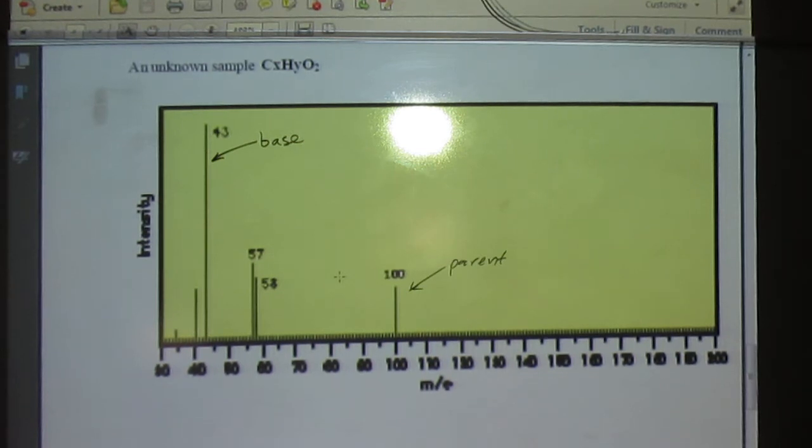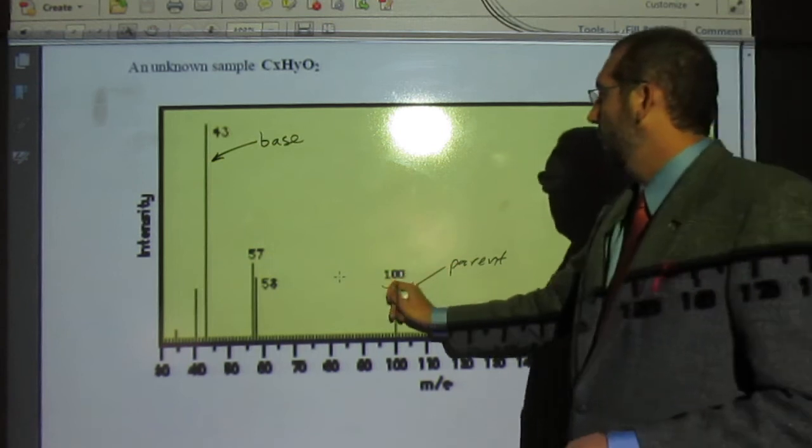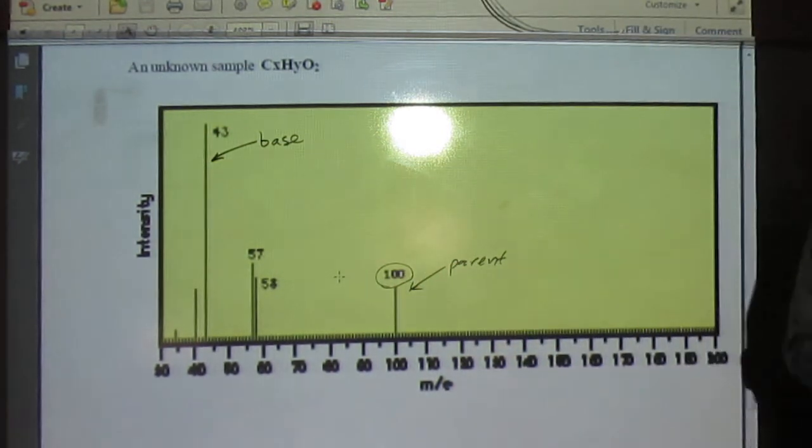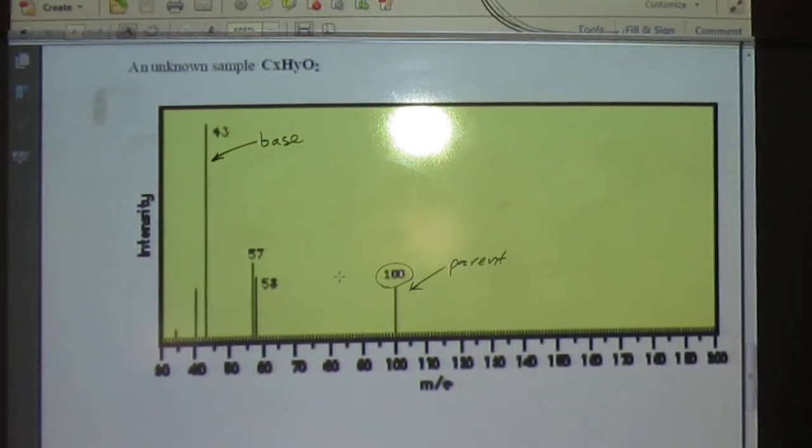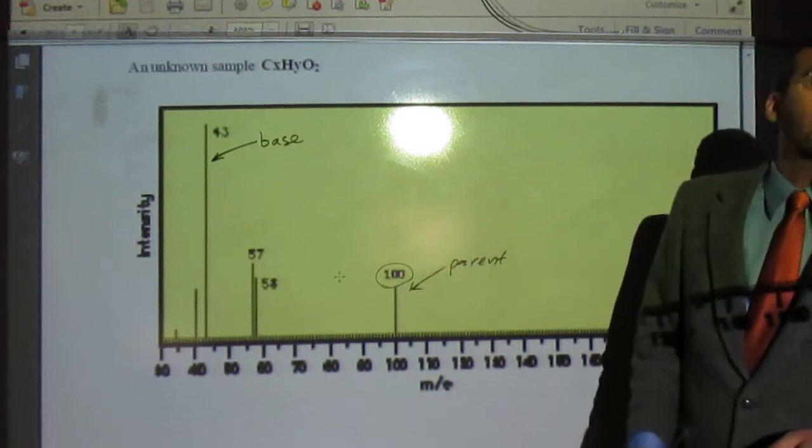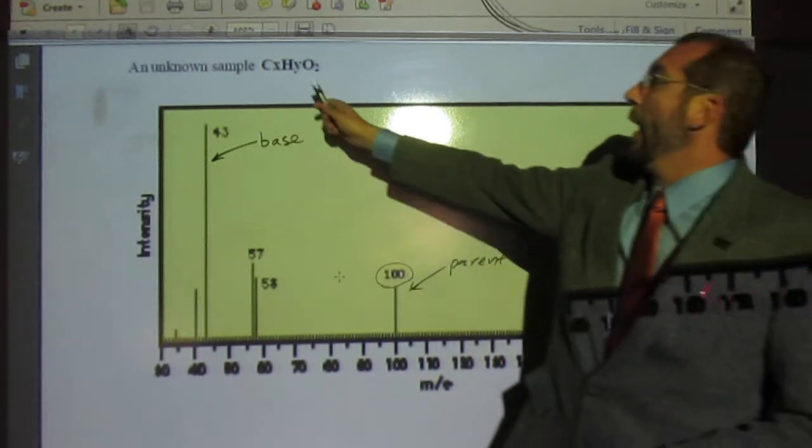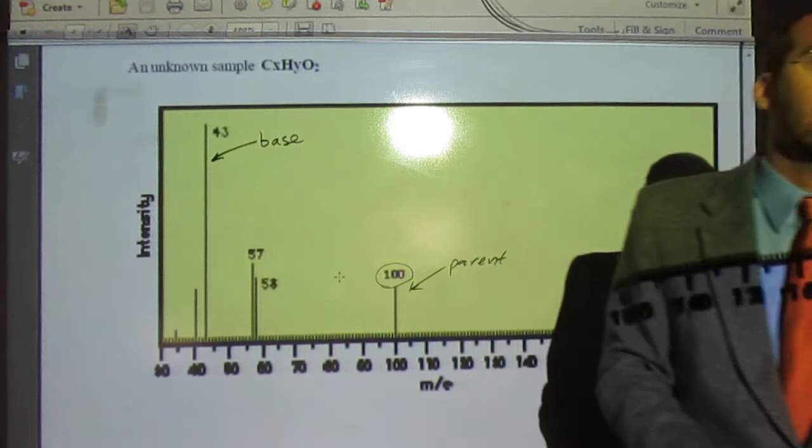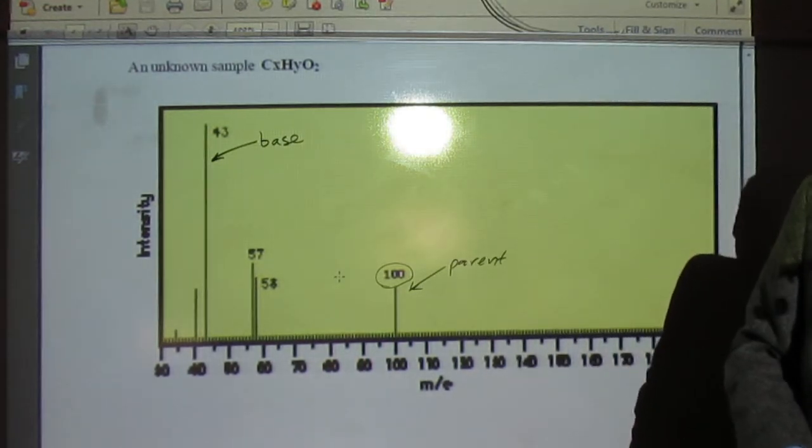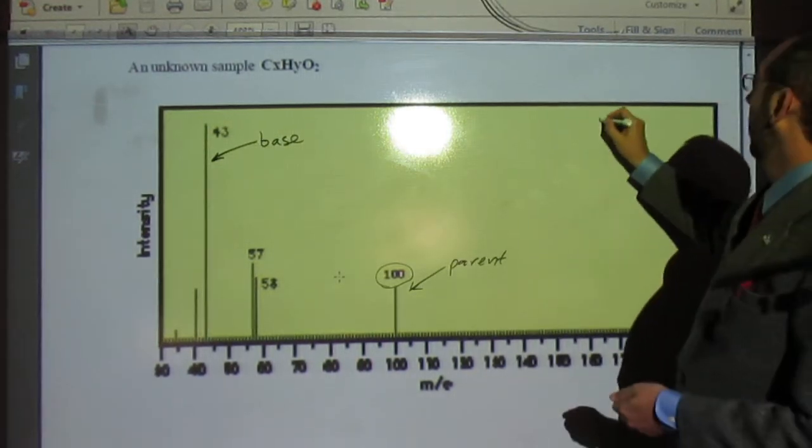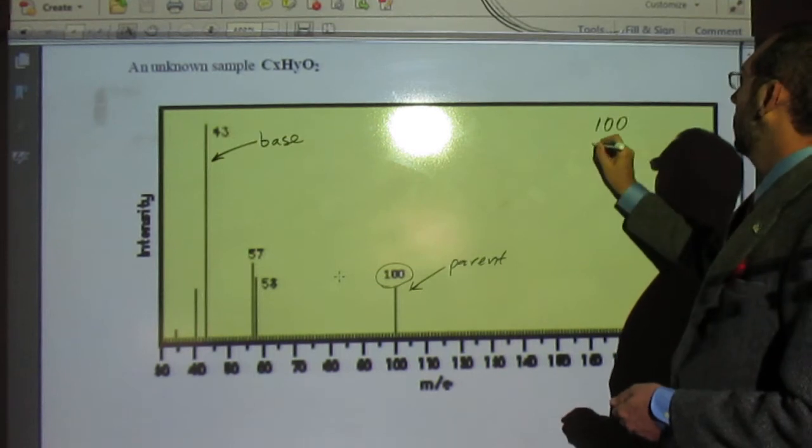And the parent peak, the parent mass gives you the mass of the whole molecule, right? The cool thing about it is we have the mass of the whole molecule, 100, and we know that there's two oxygens in there. So what can we do starting out? Take out those two oxygens.